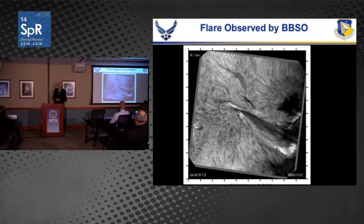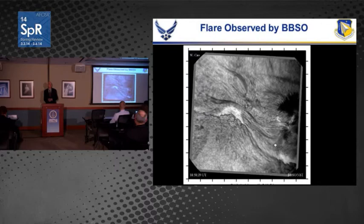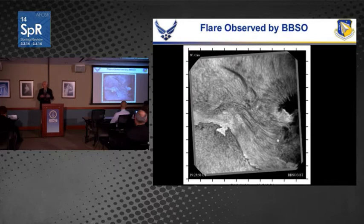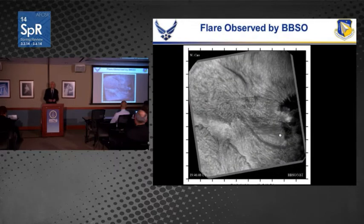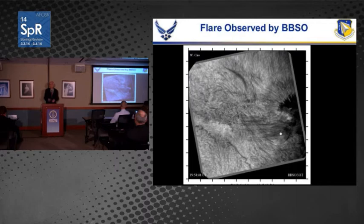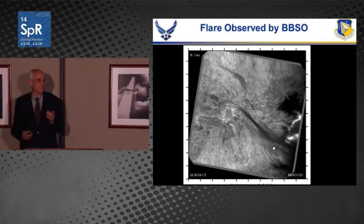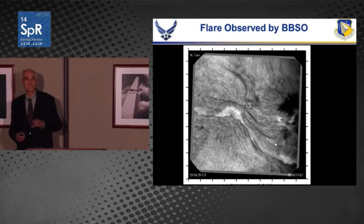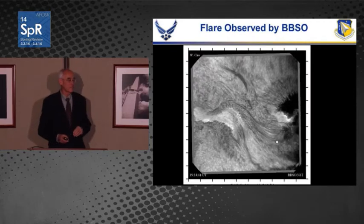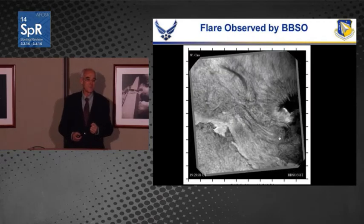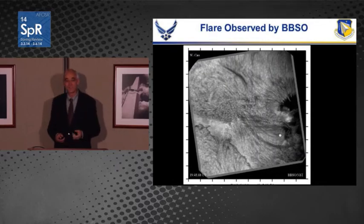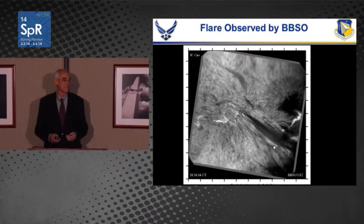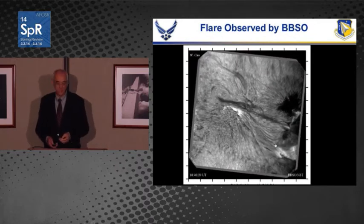This is what a flare looks like close up from Big Bear Observatory. It's not as simple as an explosion — it's a very complex structure. The dark lines above the flare are cooler plasma on magnetic field lines; viewed from the side, they'd be the arcs we saw earlier. It's a very complex process we're just starting to understand. There are some models starting to be able to predict if an active region can be expected to flare or to launch a coronal mass ejection.